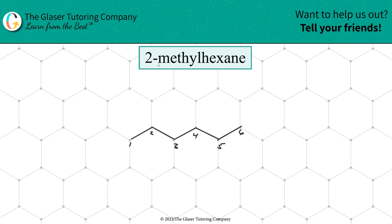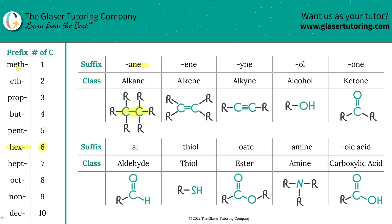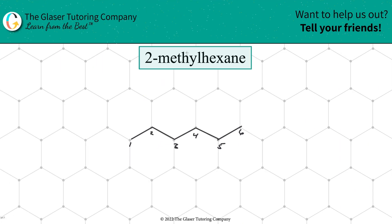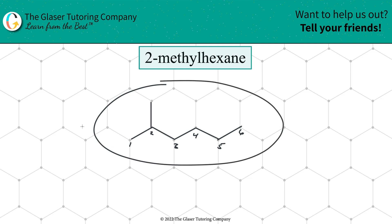Now we're going to focus on the substituent portion. We have a methyl group. How do I know that's a substituent? Because it ends in 'yl' — methyl. Now meth refers to one carbon, so that means I have a one carbon substituent on carbon number two of the parent. These numbers always represent locations on the parent. So go to location number two on the parent, there it is, and then draw in simply your methyl group. And that's it — 2-methylhexane.